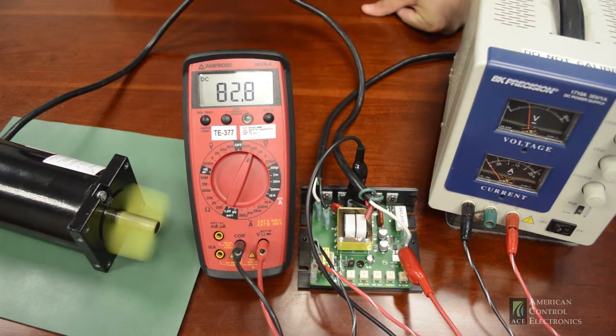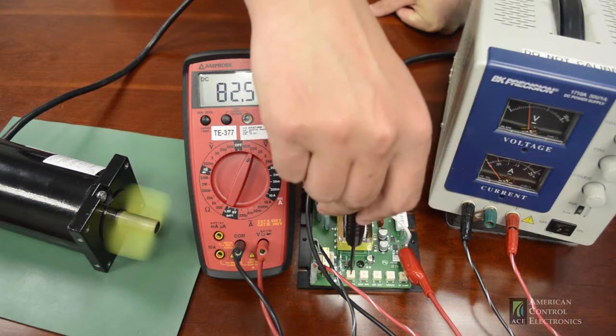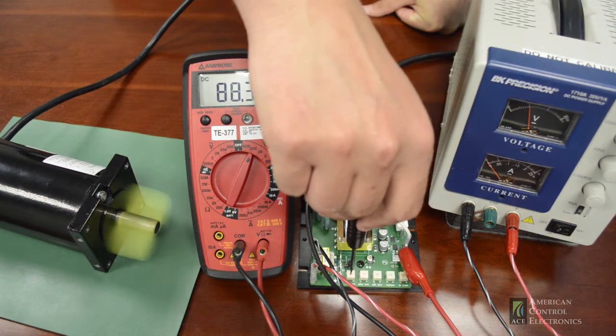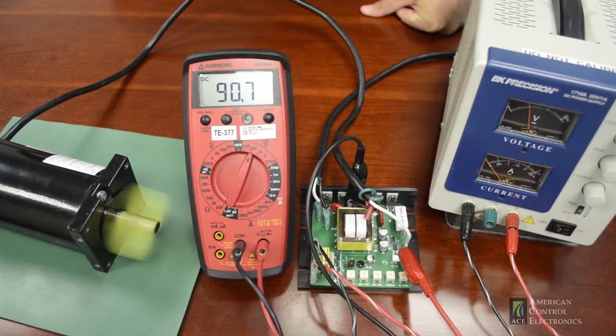We want the drive to output 90 volts. We'll turn the trim pot clockwise until we reach 90 volts and tighten it up like so.